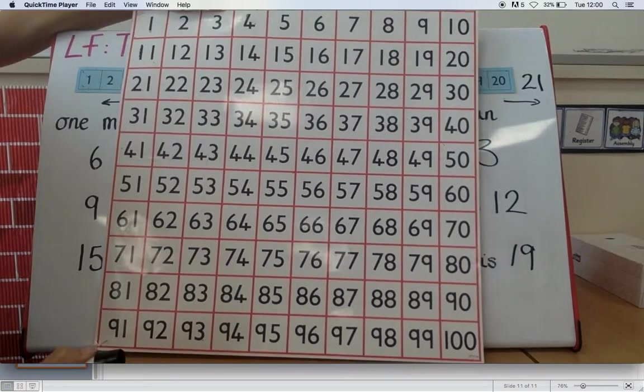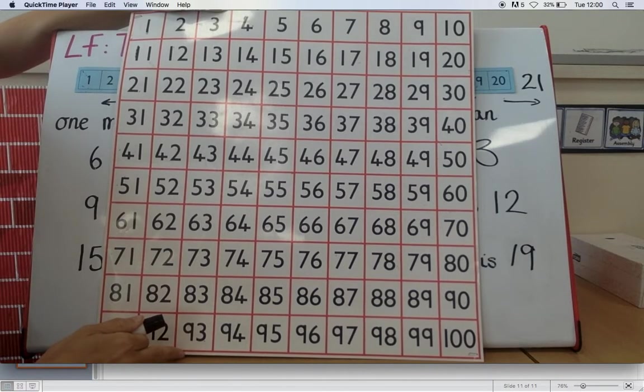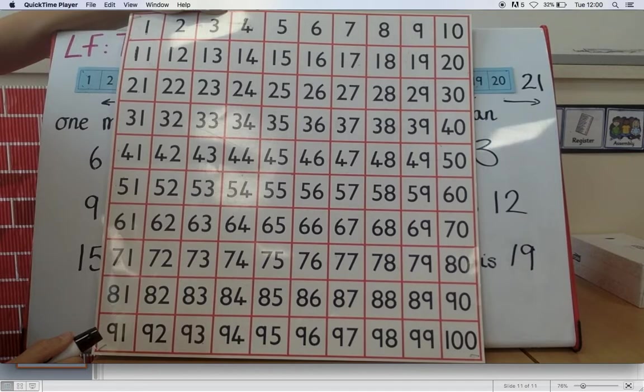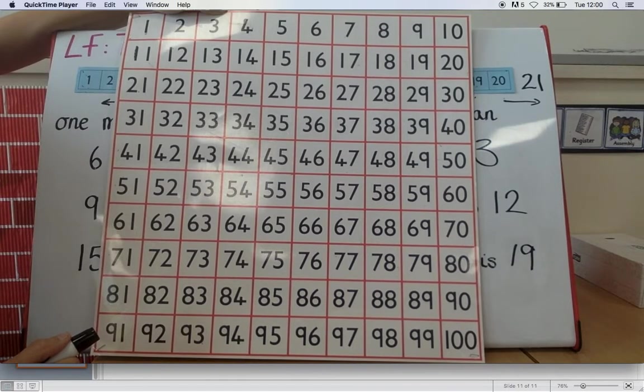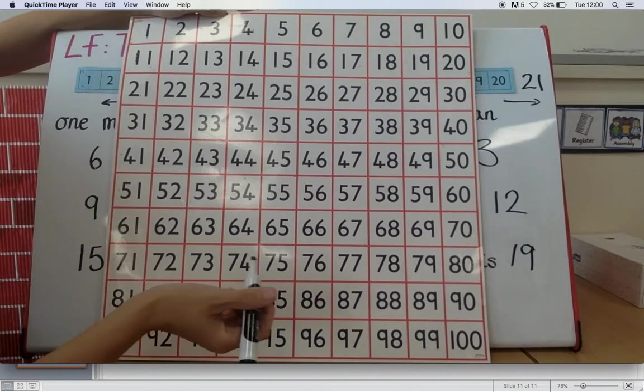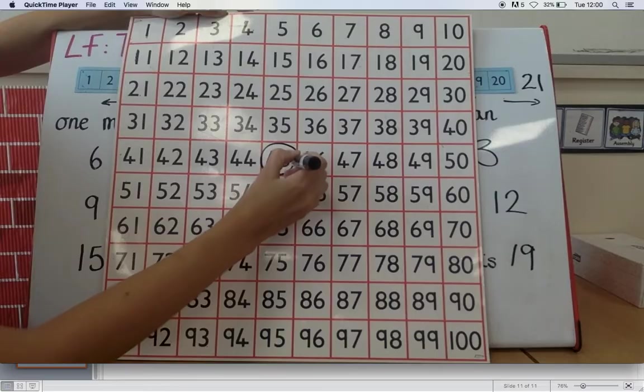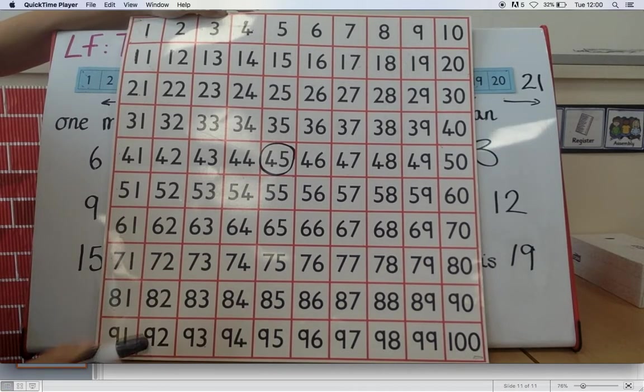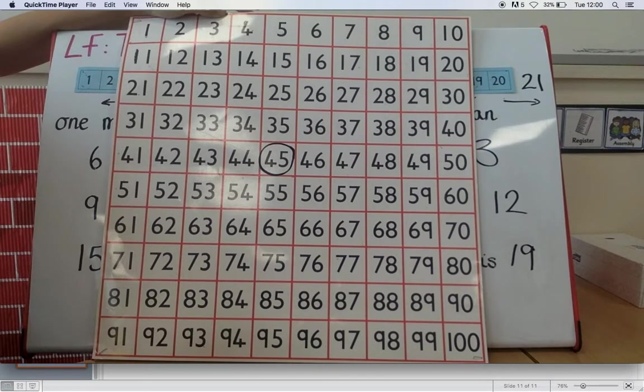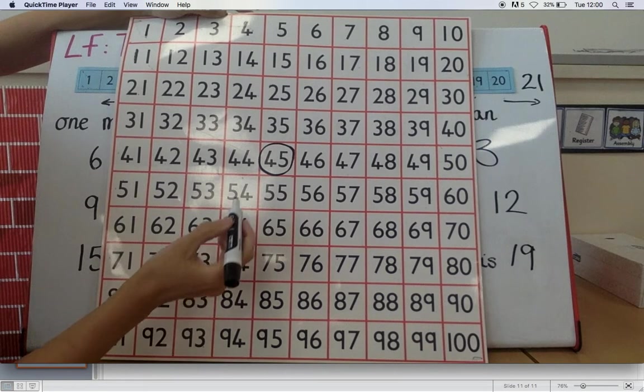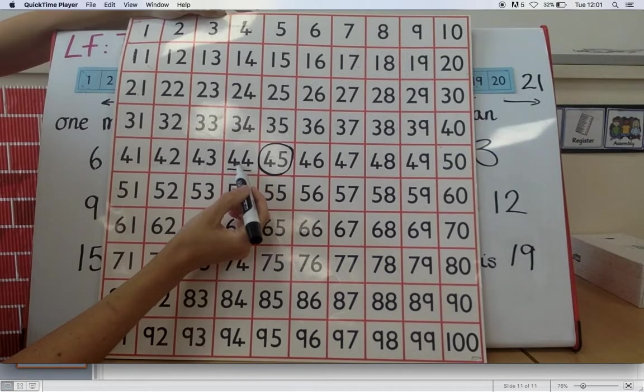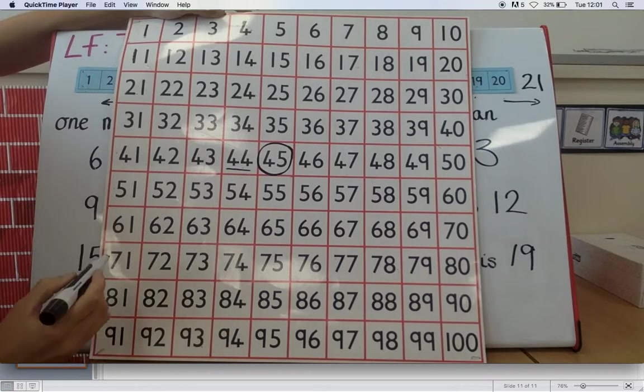So if I wanted to find one more than the number forty-five, can you spot the number forty-five in my hundred square? Think about what forty-five might look like. What's going to be in the tens column? What's going to be in the ones column? If you're not sure, pause the video so you can look for it. Number forty-five. So here is number forty-five. Found that there. Now I want to find one less than forty-five. Can you tell me what one less than forty-five is? Have a look at the hundred square. Now here we go this way remember. We go down. So one less than forty-five is forty-four.